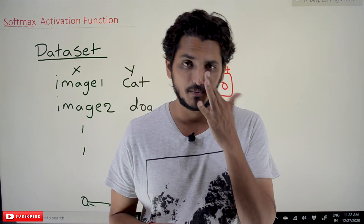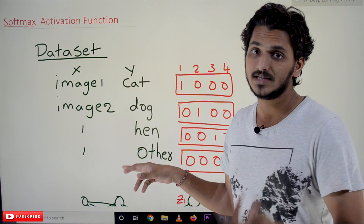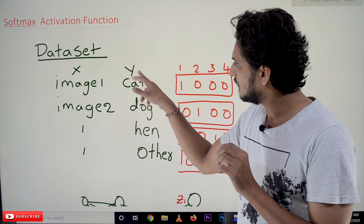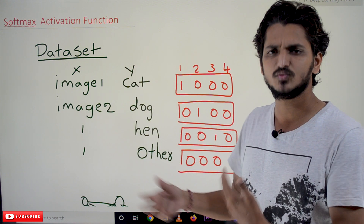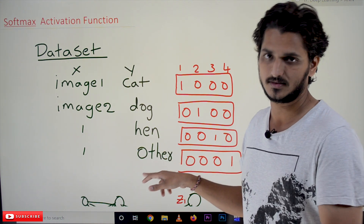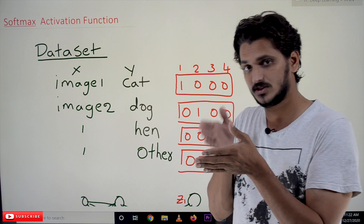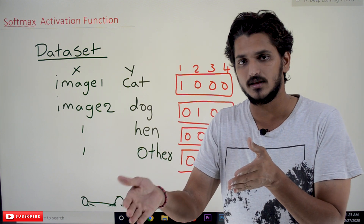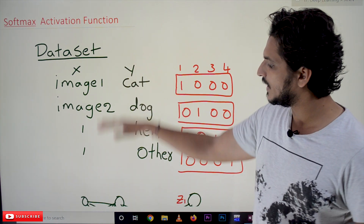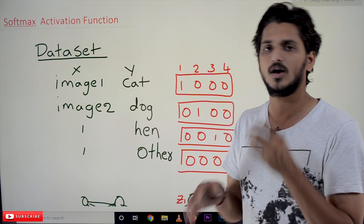Let's take an example to understand the Softmax function. Our dataset has X as input and Y as output — we are taking images as input. Suppose we have 10,000 images: image 1 is a cat, image 2 is a dog, image 3 is a hen, and image 4 belongs to others. Our neural network has to identify whether a given image is a cat, dog, hen, or other category — so we have 4 different classes. The neural network adjusts its weights to identify which category an image belongs to.